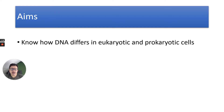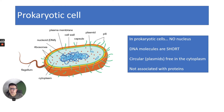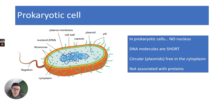You will need to know about how DNA differs in eukaryotic and prokaryotic cells. So firstly, let's look at a prokaryotic cell. You looked at the structure of prokaryotic cells in the cell biology section of the A-level, but we'll just recap. Prokaryotic cells don't have any organelles and therefore they don't have a nucleus. DNA molecules are very short and you tend to have circular plasmids free in the cytoplasm. They are also not associated with proteins called histones.